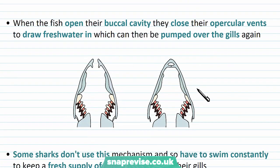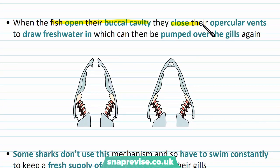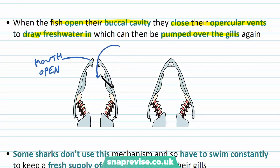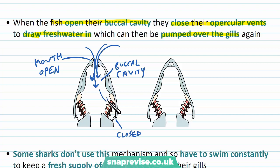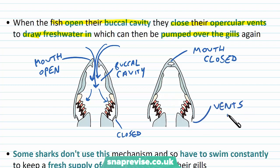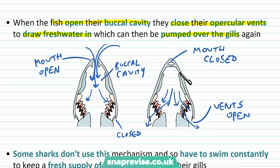First, the fish open their buccal cavity and close the operculum vents simultaneously. This draws fresh water into the buccal cavity, which then gets pumped over the gills. The vents are closed so that water doesn't escape and is forced to flow over the gills. Then the mouth becomes closed and the operculum vents open, providing the pathway for water in the mouth to flow over the gills and escape out of the vent. This allows one-way traffic of water: entering the mouth first and then going through the gills and out. If the mouth and vents were open at the same time, water could go in either direction and there wouldn't be much flow.